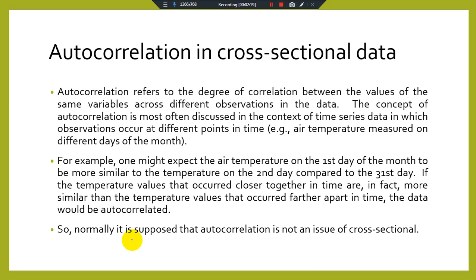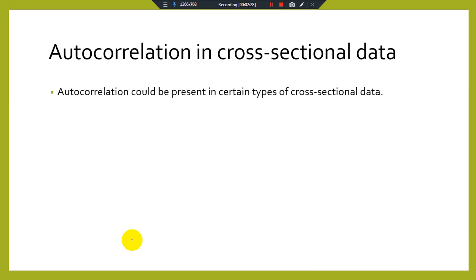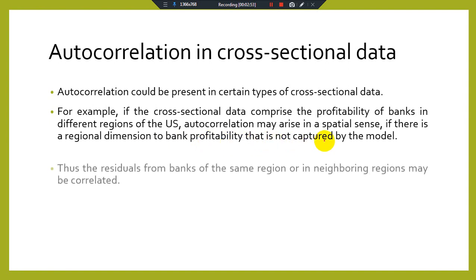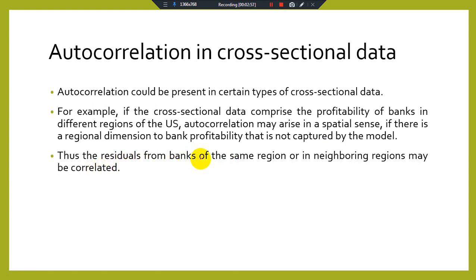Normally it is assumed that autocorrelation is not an issue in cross-sectional data, but there are some types of cross-sectional or panel data that do have this issue. For example, if the cross-sectional data comprises the profitability of banks in different regions of the US, autocorrelation may arise in a spatial sense if there is a regional dimension to bank profitability not captured by the model — meaning residuals from banks in the same or neighboring regions may be correlated.